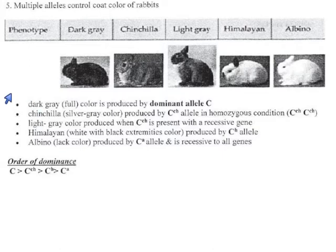They say you get light gray from C^ch with something recessive to it, which could be C^h or C^a. It's not double C^ch—that would be chinchilla. It's C^ch with h or C^ch with a. So let's make a note: our light gray rabbit is either C^ch C^h or C^ch C^a.